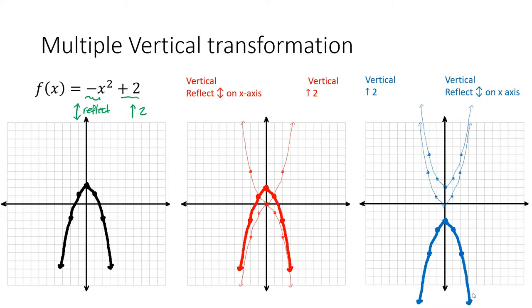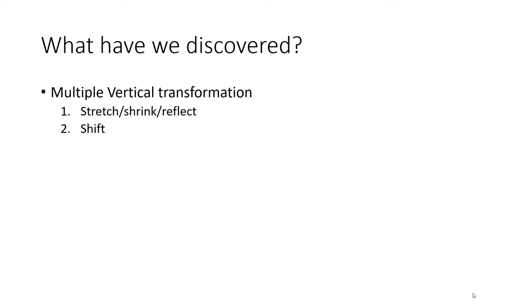But which one is the correct one? It is the first one. So it seems that when it comes to multiple vertical transformations, we have to do reflections, and then the shift comes after. So that's what we discovered. We must do a stretch, shrink, or reflect. And then shift is coming after.